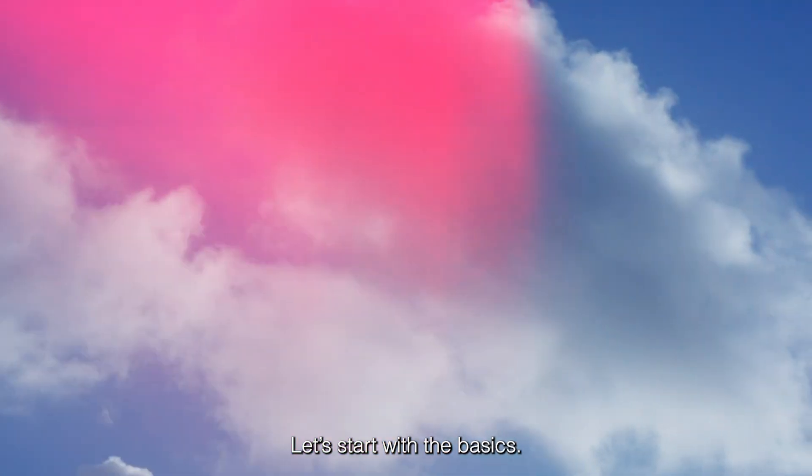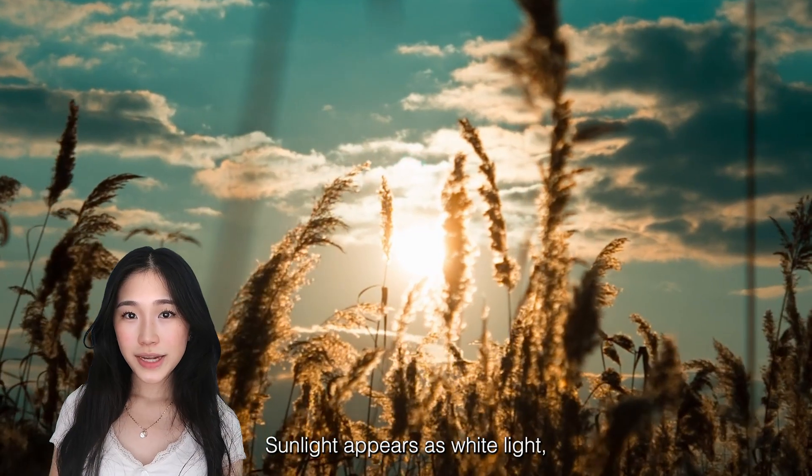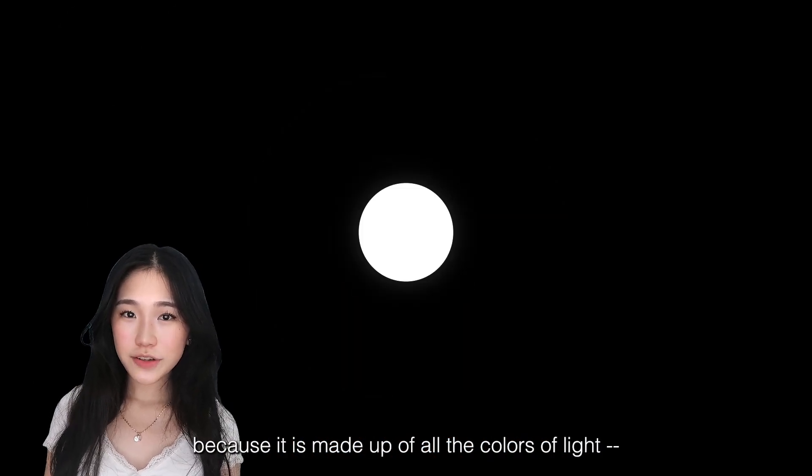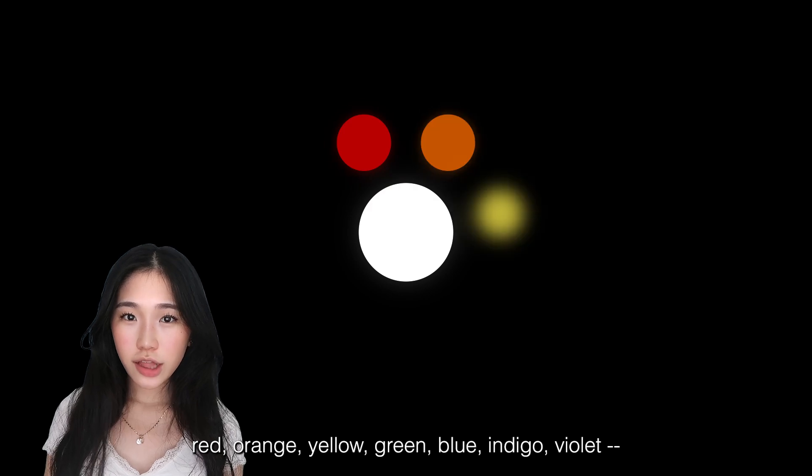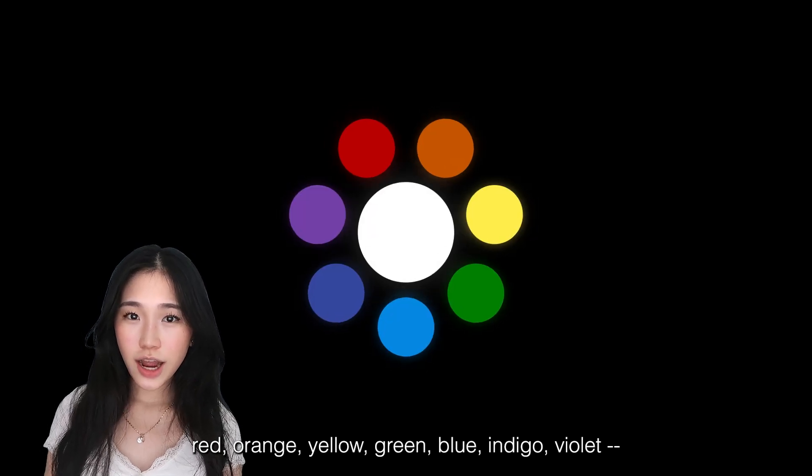Let's start with the basics. Sunlight appears as white light because it is made up of all the colors of light: red, orange, yellow, green, blue, indigo, violet, all blending together.